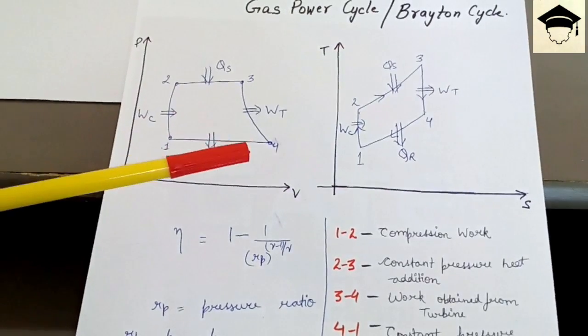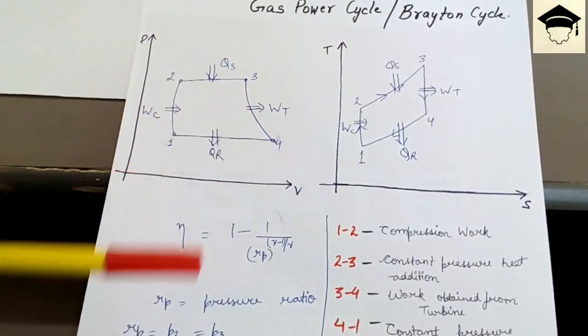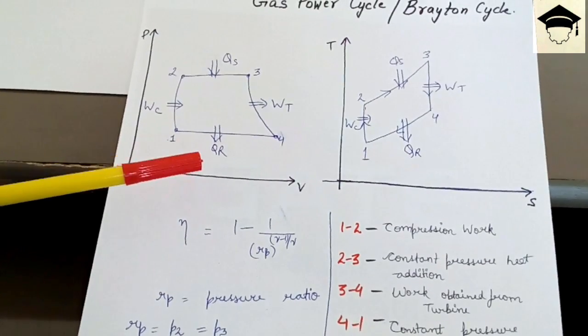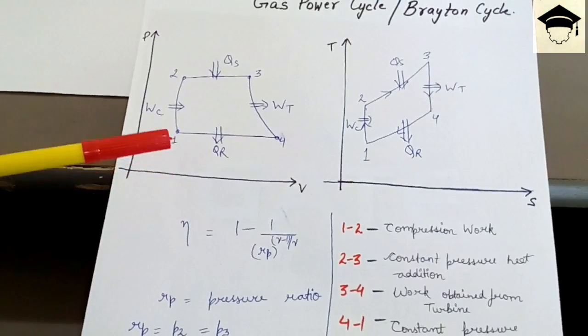From three to four we obtain the work from the turbine. This is the useful work from three to four. And from four to one it is constant pressure heat rejection.